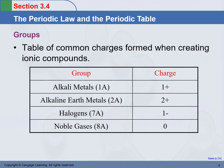Elements in some columns have unique names. For example, elements in column 1A — while most of them are metals except hydrogen — all other metals in group 1A are called alkali metals. Group 2A elements are all metals and are called alkaline earth metals. Elements in group 7A are called halogens. Elements in group 8A are called noble gases.